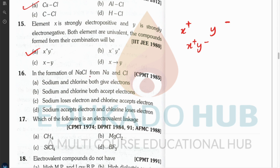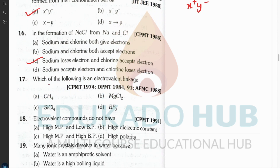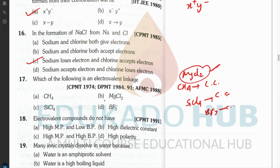Question sixteen: in the formation of NaCl from Na and Cl, sodium loses an electron — it does not give and accept simultaneously. Question seventeen: which is an electrovalent linkage? CH₄, SiCl₄, and BF₃ are all covalent compounds. What's left — NaCl or MgCO₃ — is the electrovalent compound, showing electrovalent linkage.